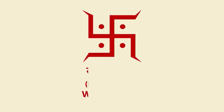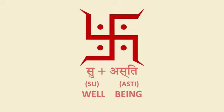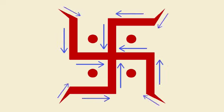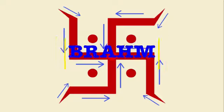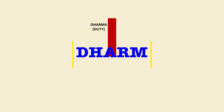Swastik comes from Asanthi of Su, or Well, plus Asti, or Being. The first set of four perpendicular arms are drawn clockwise from the outside in, and the center is representative of Brahm — all energies converging into a centrifugal force of our Creator. The first arm is from top to center, and denotes Dharma, or the duties instilled by eternal consciousness.